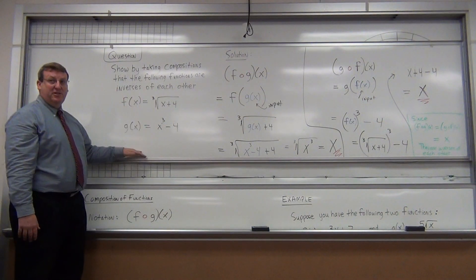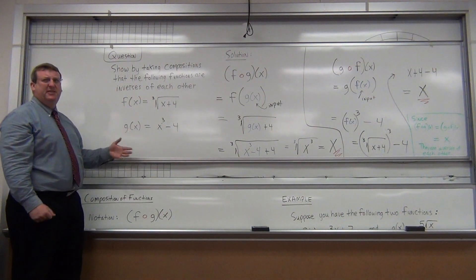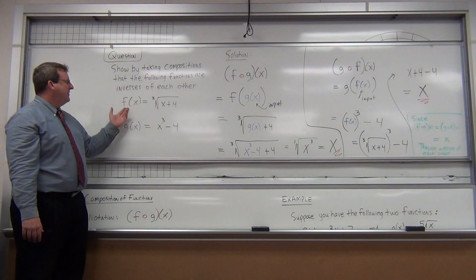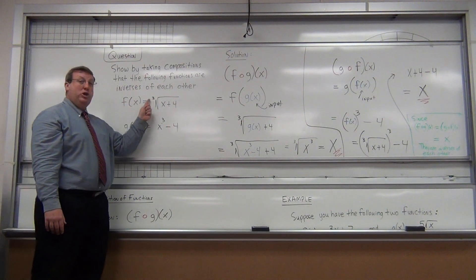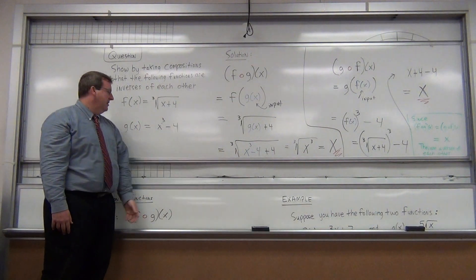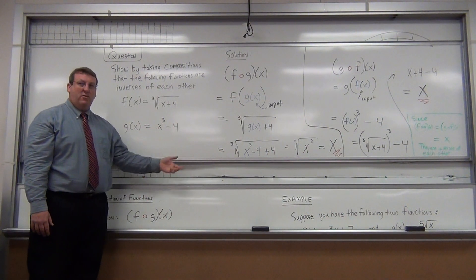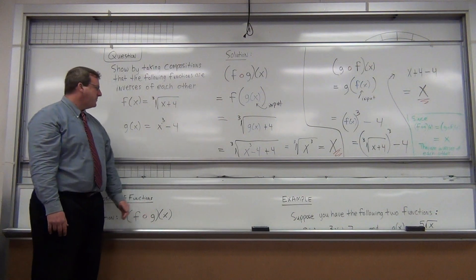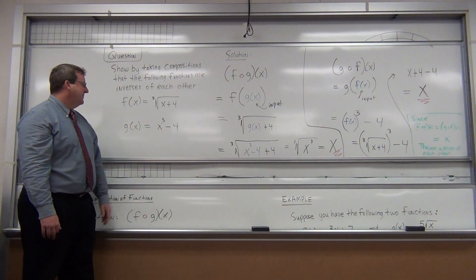So, two different functions. They still have the same letters, f and g, just to keep it simple. But this time, the function f is a cube root. You see the three near the radical sign? A cube root function. g of x is x cubed minus four. It's an exponential function. x cubed minus four.